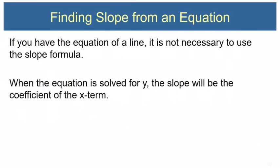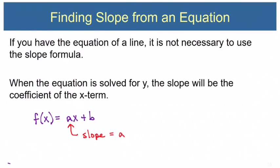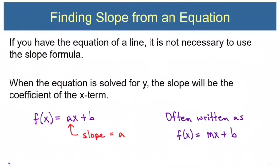If you have the equation of a line, it's not necessary to use the slope formula. When the equation is solved for y, the slope is the coefficient of the x term. All linear functions can be written in the form ax plus b, and the slope equals the coefficient a. Because of this, we frequently write a linear function as mx plus b instead of a, since m stands for slope.